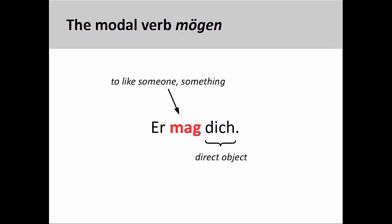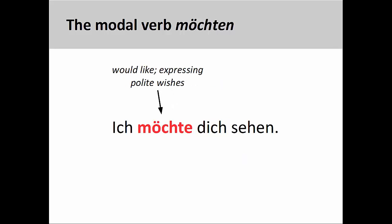The modal verb mögen means to like someone or something. Although it can be used with an infinitive in some contexts, most of the time it will be used only with a direct object. Er mag dich — he likes you. This is the only modal verb that is not regularly used with an infinitive. The modal verb möchten, however, requires an infinitive and is used to express polite wishes. Ich möchte dich sehen — I would like to see you.